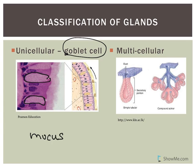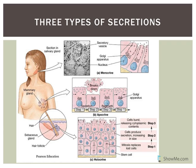The other glands are multicellular and are classified based on the relationship between the ducts and the glandular area, as well as the shape of the secretory portion. That structural classification won't be on the test. What's more important is the classification of exocrine glands by their mode of secretion — there are three types.